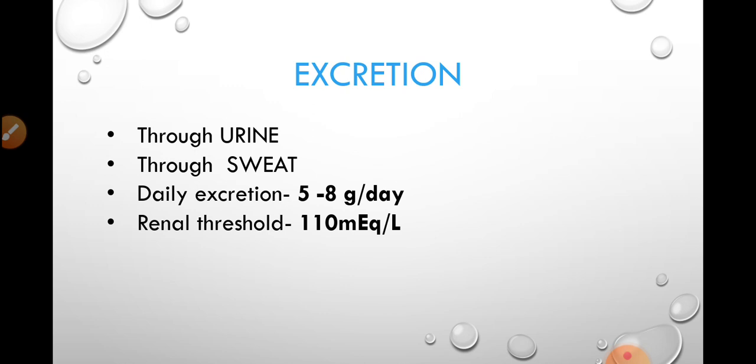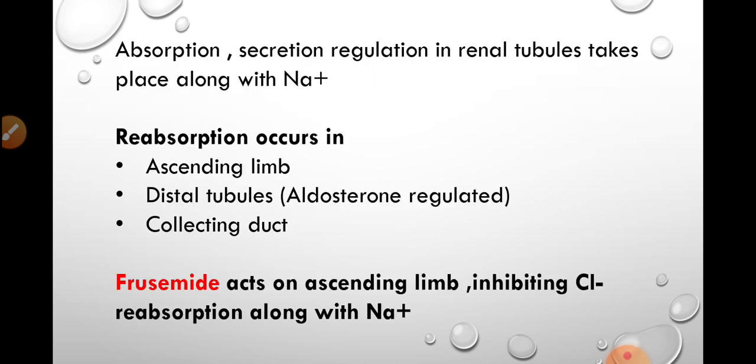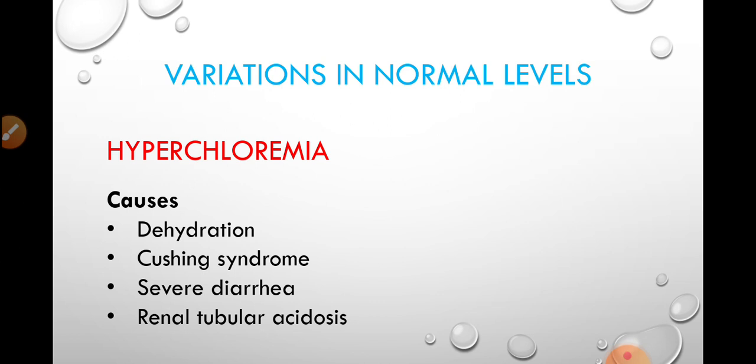Chloride ions are mainly excreted through urine and sweat. The daily excretion is about 5 to 8 grams per day, and the renal threshold is 110 milliequivalents per liter. Absorption, secretion, and regulation of chloride ions in the renal tubules takes place along with sodium. The reabsorption of chloride ions occurs in the ascending limb, which is impermeable to water, and in the distal tubules and collecting duct. This mechanism is aldosterone-regulated — aldosterone increases reabsorption of sodium and chloride ions. Furosemide acts on the ascending limb and inhibits chloride and sodium reabsorption.